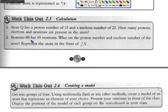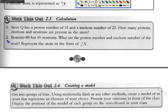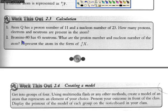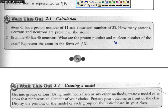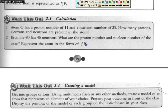Let's take a look at this question, question number 2 from exercise 2.3 on page 19. Bromine-80 has 45 neutrons. What are the proton number and nucleon number of the atom? Represent the atom in the form X-A-Z.